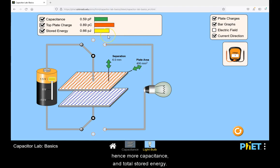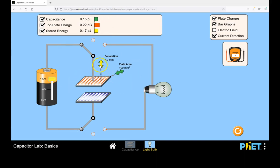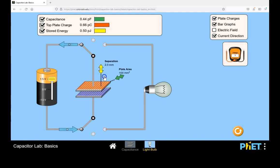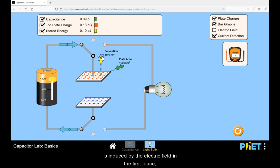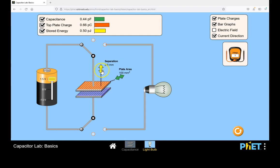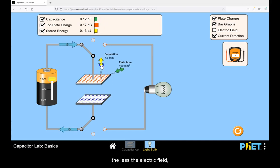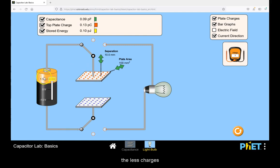Hence the greater the separation, the less the electric field, the less charges the electromotive force will separate and hence lower capacitance.